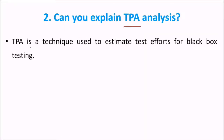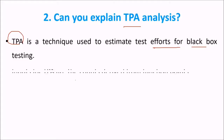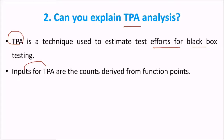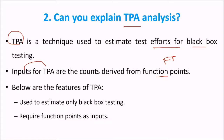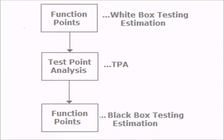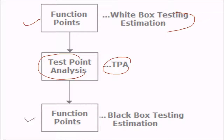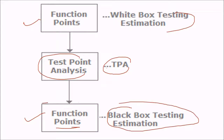Can you explain TPA analysis? TPA is a technique used to estimate the test efforts for black box testing. The inputs for TPA are counts derived from function points. TPA is used to estimate only the black box testing efforts, and it requires function points as input. Using function points, we can find the black box testing estimate — this is test point analysis.